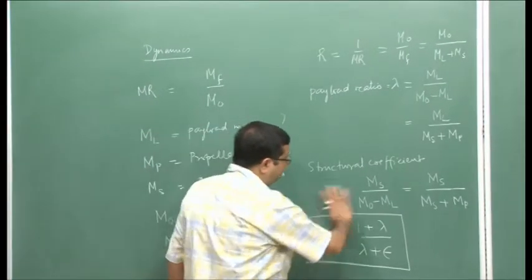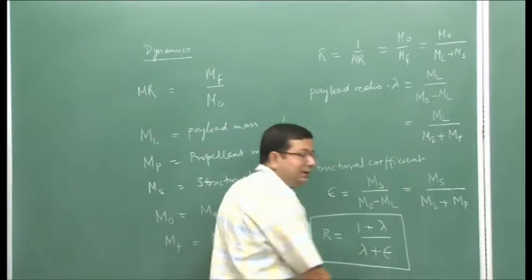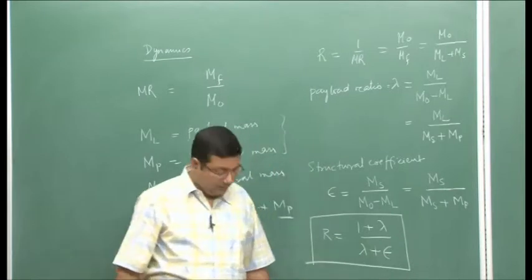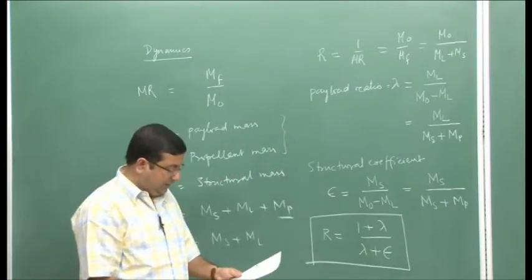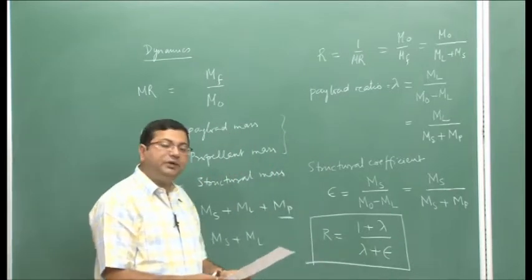We had combined these three definitions — R, lambda, and epsilon — and showed that R is equal to 1 plus lambda divided by lambda plus epsilon. This is what we showed in the last lecture. Now let us proceed from here.